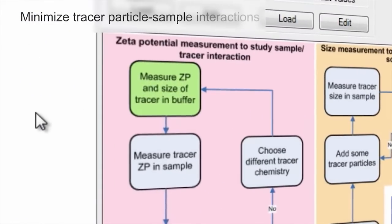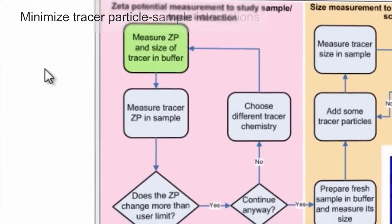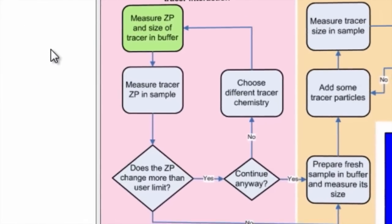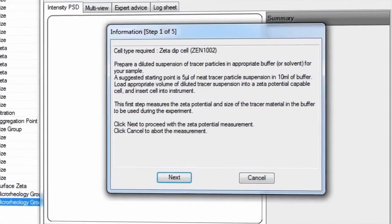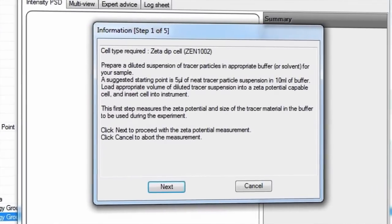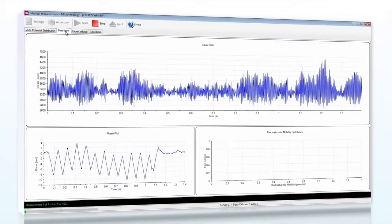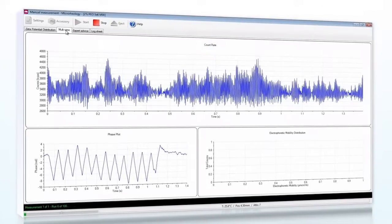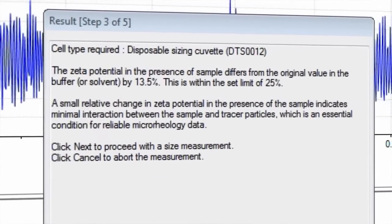An essential requirement is to minimize tracer particle to sample interactions since these will affect particle diffusivity and hence the measured mean squared displacement. This is assessed by using a zeta potential pre-measurement step and comparing the value for tracer particles in solvent alone and then in the presence of the sample. If the zeta potential change between these measurements is significantly different then the use of a different tracer particle surface chemistry may be required.